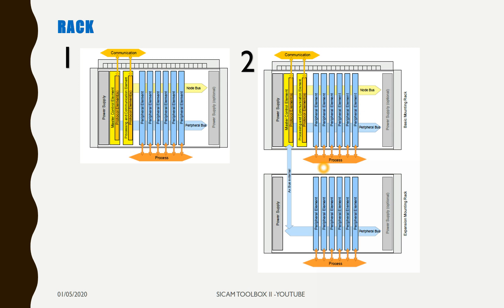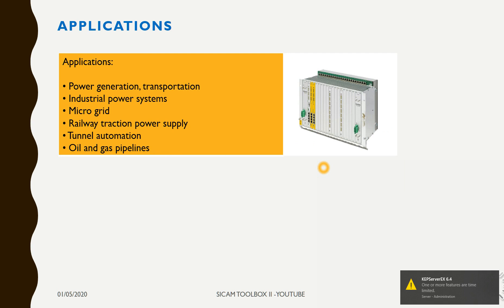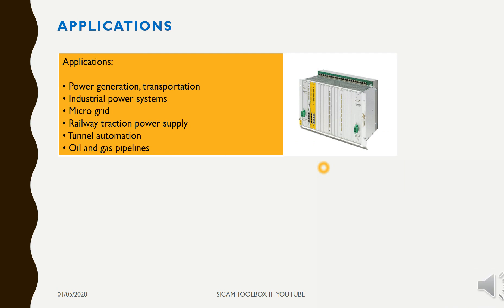There is another rack connected by AXE bus externally. In that rack you can see peripheral elements. That rack is a migration rack. Applications where the automation unit is used include: power generation, transportation, industrial power systems, micro grid, railway traction power supply, tunnel automation, and oil and gas pipelines.